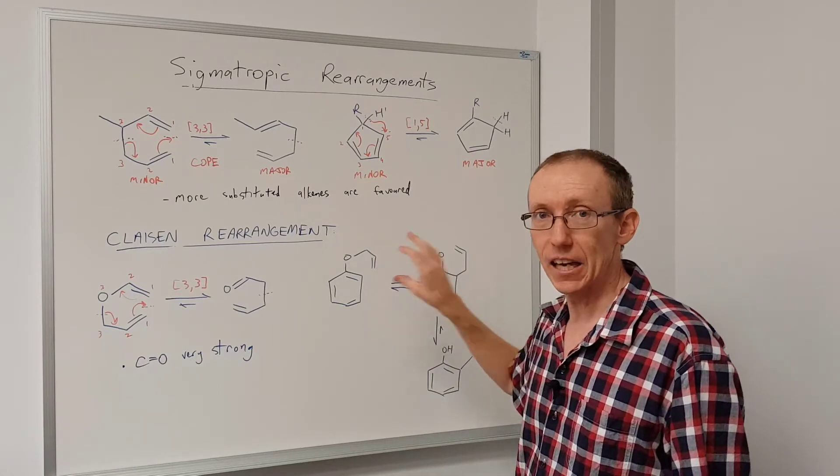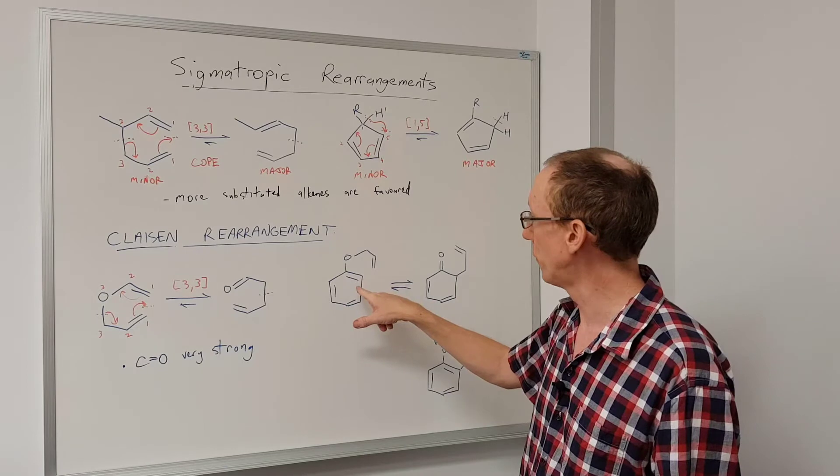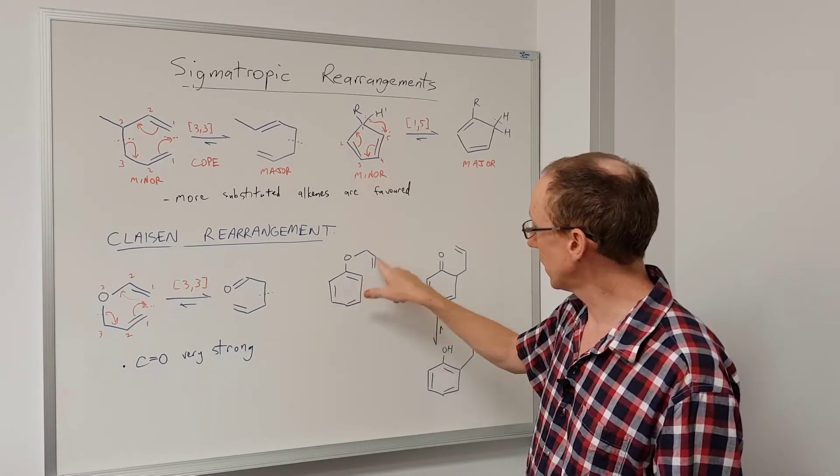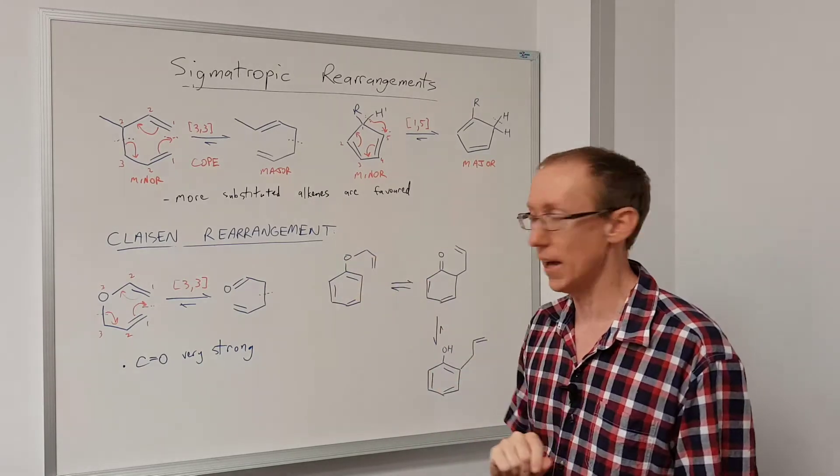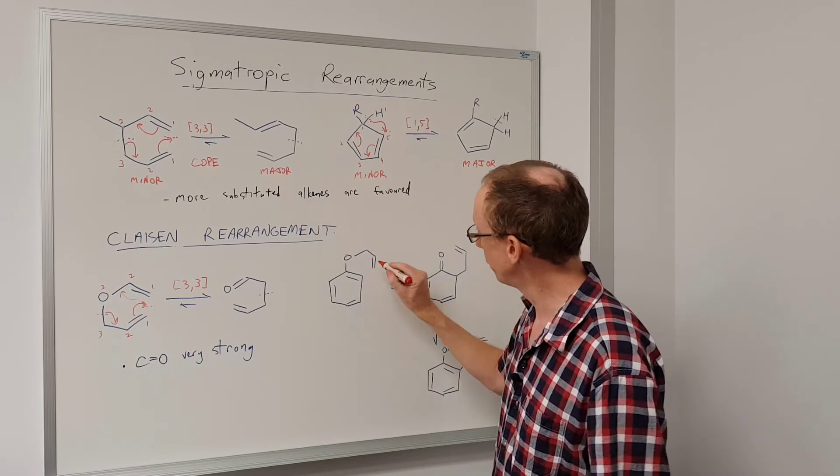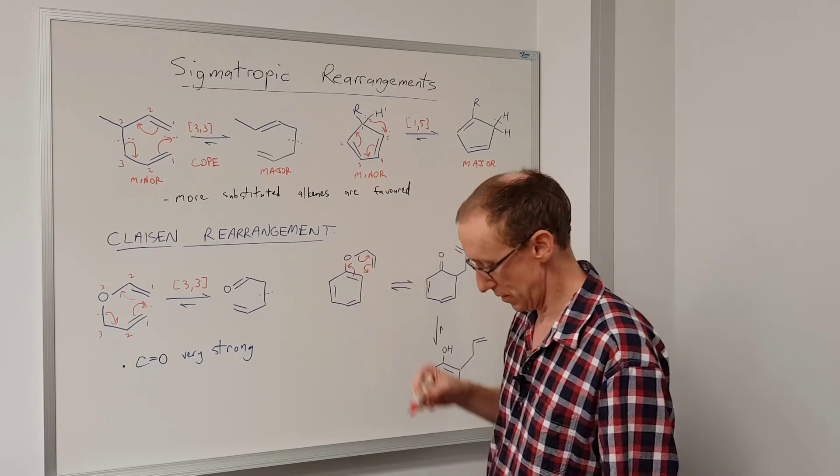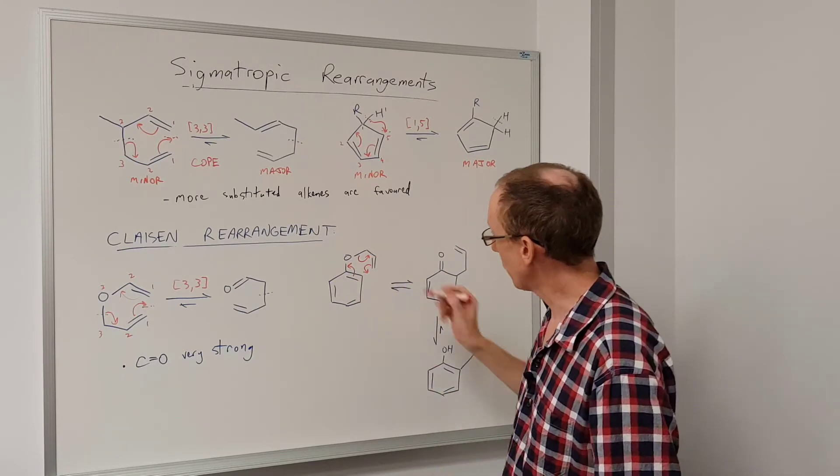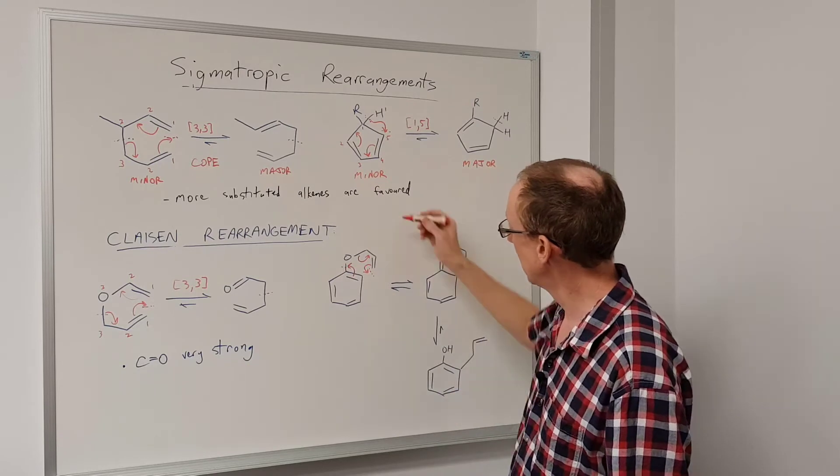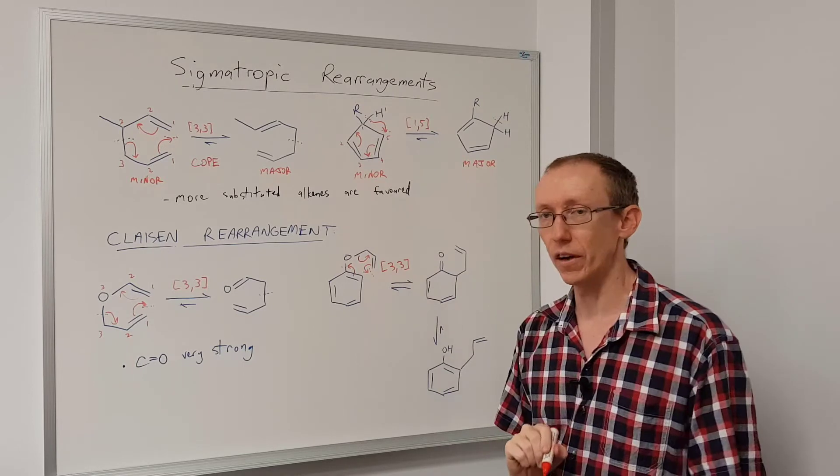A particular example of Claisen rearrangement that is really important is the rearrangement of phenyl allyl ethers. This is where we have a benzene ring connected to an allyl group through an oxygen atom. So this can undergo exactly the same sort of mechanism. Electrons moving around in a circle like this. We've got the new bond being formed here, the old bond being broken there. So this is also a 3,3 sigmatropic rearrangement.